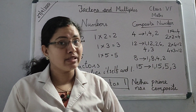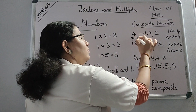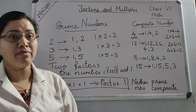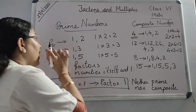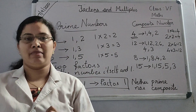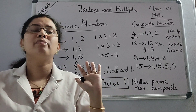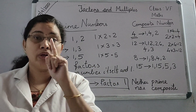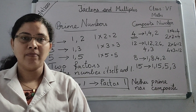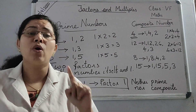Which is the smallest composite number? You cannot say it is 1 because 1 has only 1 factor. Prime numbers have 2 factors, and composite numbers have 3 or more factors. So 1 is neither prime nor composite. The smallest composite number is 4. Which is the smallest prime number? It is 2. And 2 has one more speciality — 2 is the only even prime number.